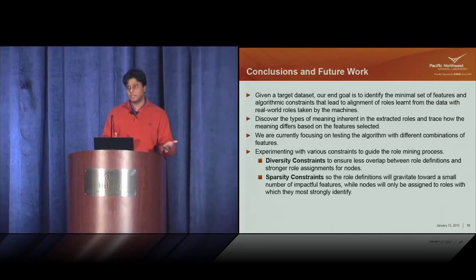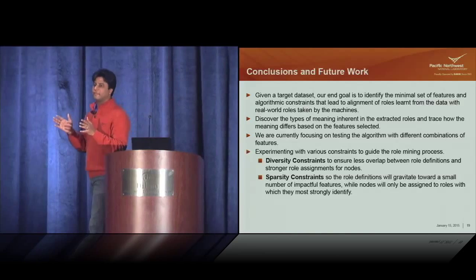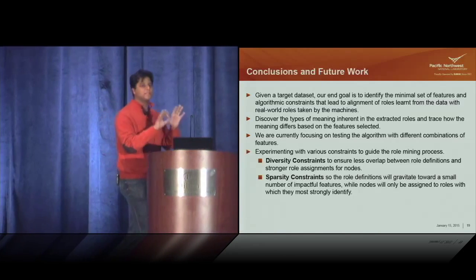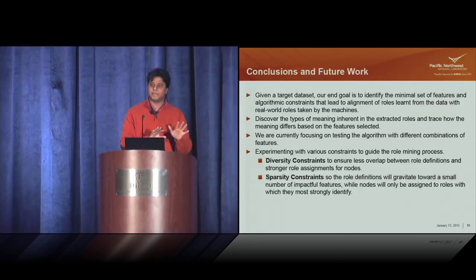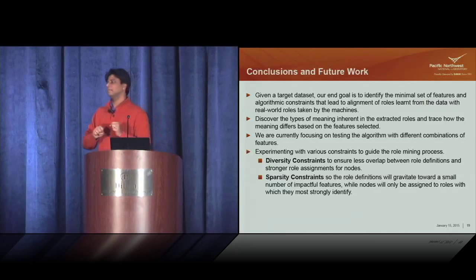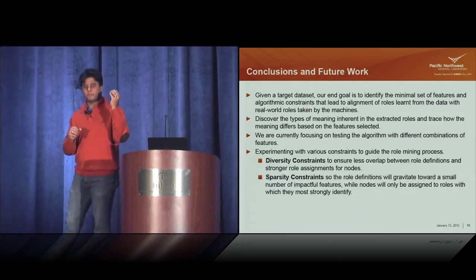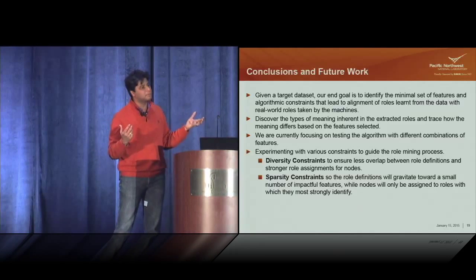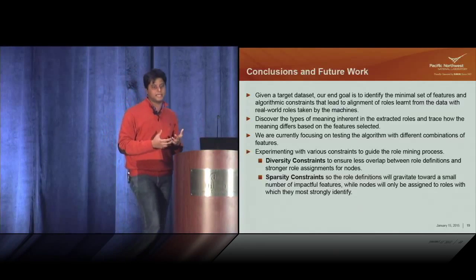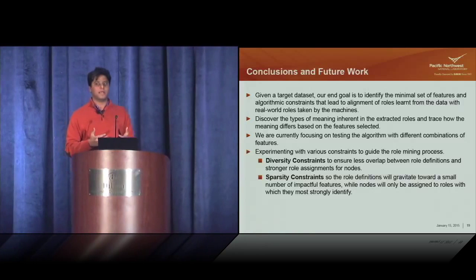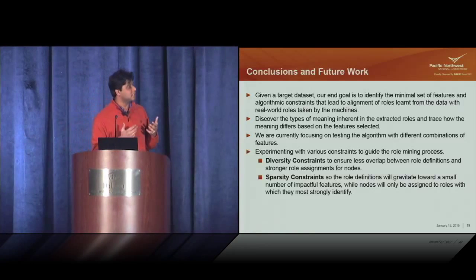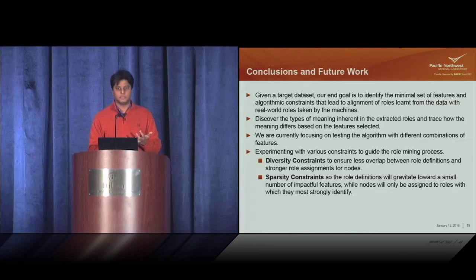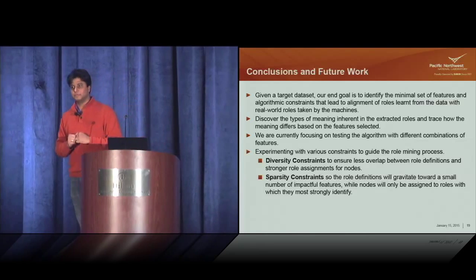We can define roles so that machines are put into buckets using as non-overlapping features as possible, versus a sparsity constraint that just uses the most dominant features even if overlapping, and picks role assignments by distance from a node to a role. These are the various tuning knobs, but the challenge remains: how do you make this work and can it really be impactful for cybersecurity?